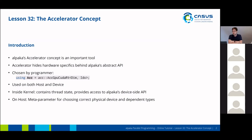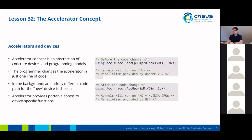This concept is used on both the host and the device. Inside the kernel, this is an actual object which contains the thread state and also provides access to Alpaca's device-side API. On the host, this is just a template parameter for choosing the correct physical device and all the dependent types that go along with that. In short, this concept is an abstraction of concrete devices and also concrete programming models.